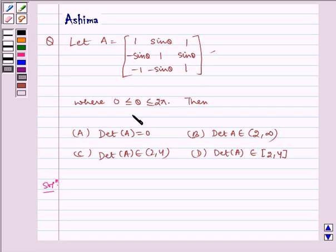Where 0 ≤ θ ≤ 2π, then: (A) Det(A) = 0. (B) Det(A) ∈ (2, ∞). (C) Det(A) ∈ (2, 4). And (D) Det(A) ∈ [2, 4].